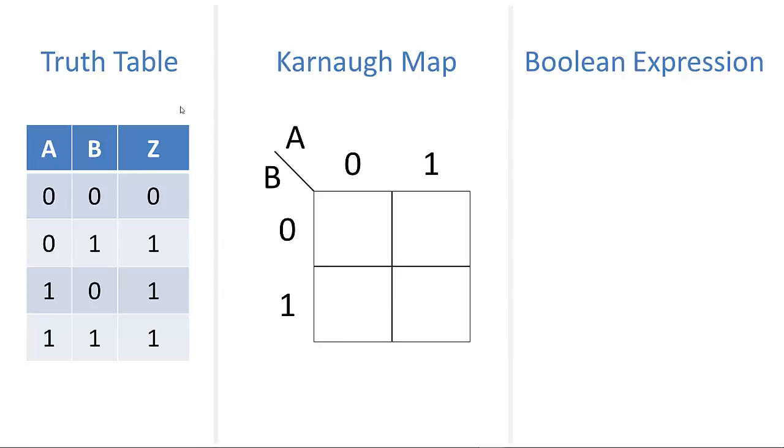First, we're going to draw an empty Karnaugh map. We have A's across the top, two possible values, 0 and 1, and B's down the left side. Again, two possible values, 0 and 1. Now we populate this table with the outputs. When A and B are both 0, Z is 0. So this cell is 0, and the other three cells are all 1.